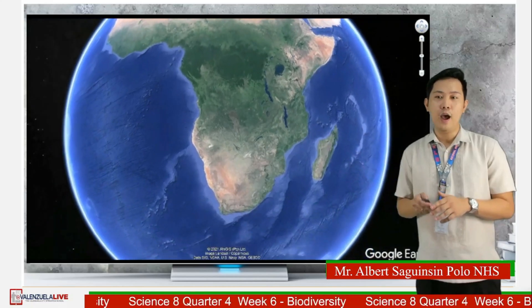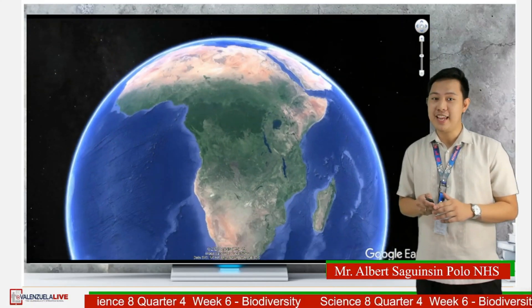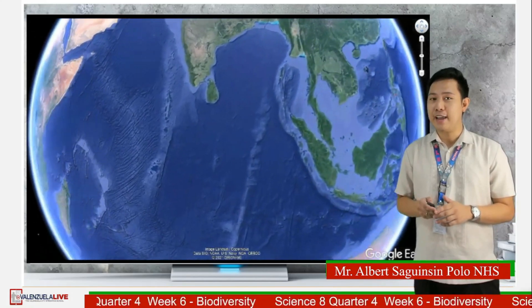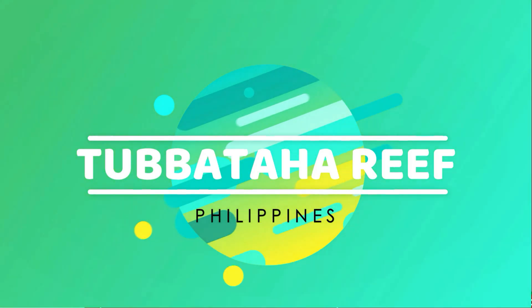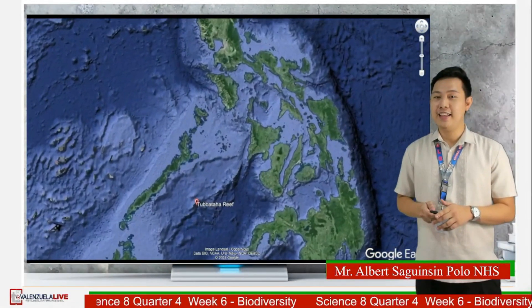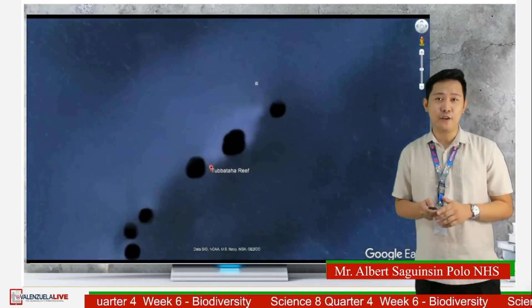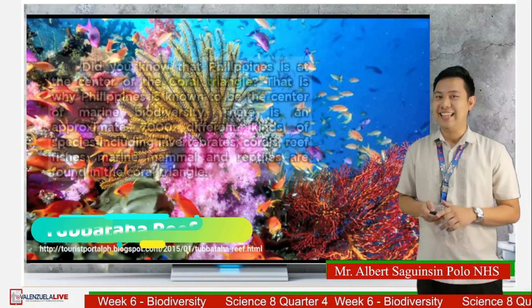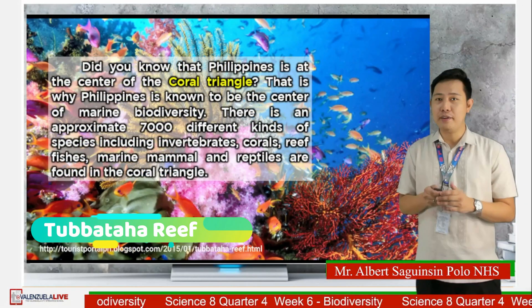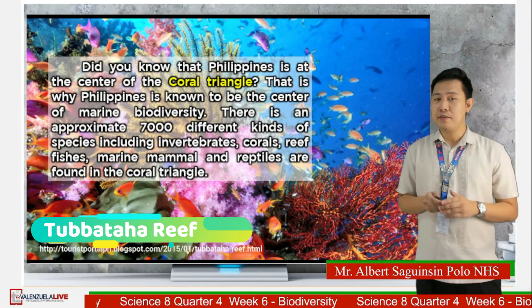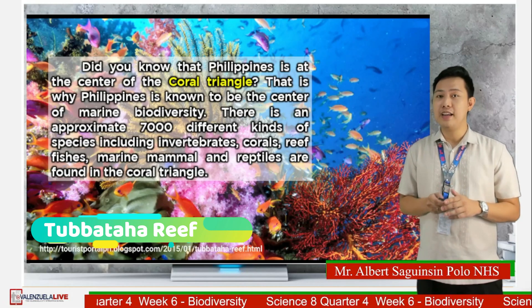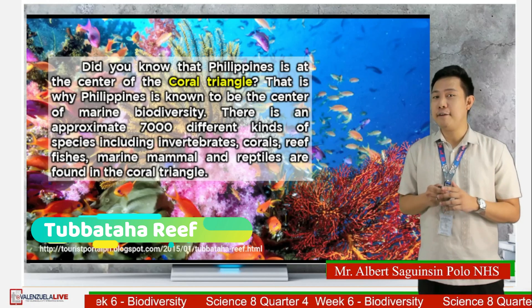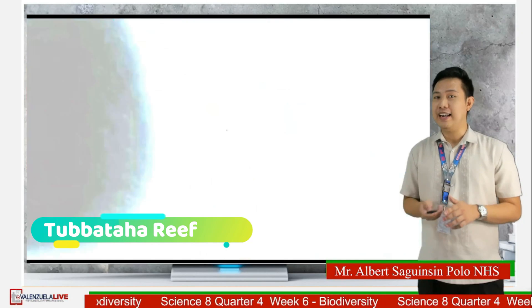For our third destination, it is located in the heart of the Orient, at the Sulu Sea, known for its abundant marine biodiversity. You are correct — it is the Philippines. The third stop is the Tubbataha Reef here in the Philippines. Did you know that the Philippines is at the center of the coral triangle? There are approximately 7,000 different kinds of species including invertebrates, corals, reef fishes, marine mammals, and reptiles found in the coral triangle.